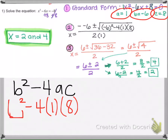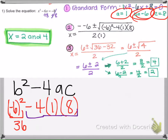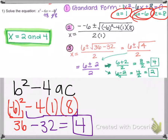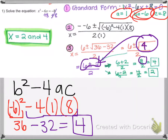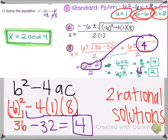B is negative 6, so negative 6 squared gives us 36. Then negative 4 times 1 times 8 is negative 32, so we get 4. The discriminant is 4. Since we can square root 4 — the square root of 4 is 2 — you could do 6 plus 2 to get 8, and 6 minus 2 to get 4, giving two answers. So because the discriminant was 4, it tells us there are going to be two rational answers.